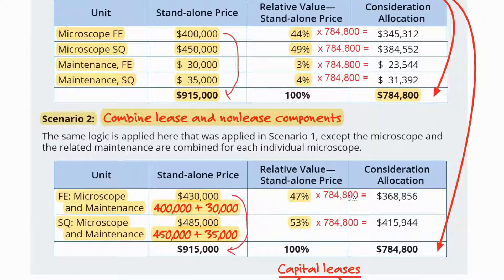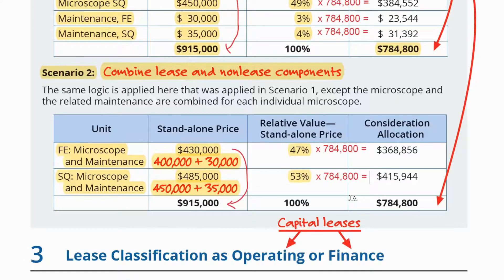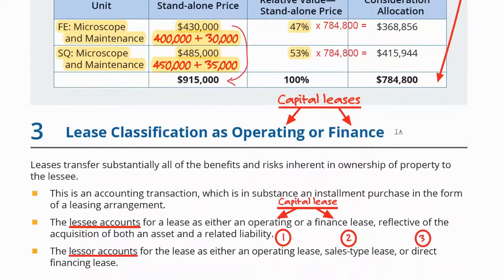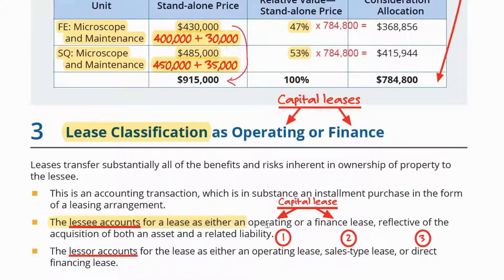The accounting treatment depends on such classification. Those requirements for accounting for leases are relatively new — we're still using the same terminology but with different treatments. For the lessee, the difference between operating and finance leases is important: the accounting treatment depends on this classification, made at the inception of the lease. For the lessor, the classification also determines the accounting treatment.